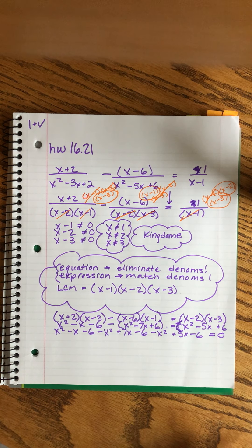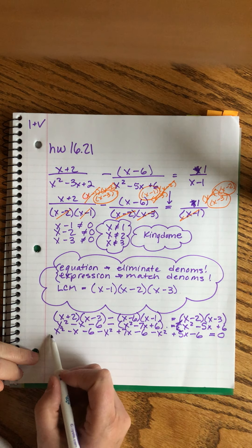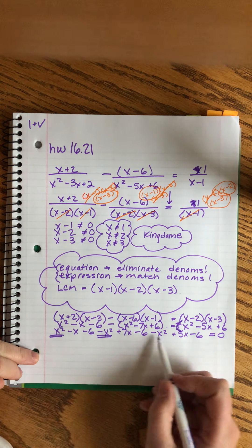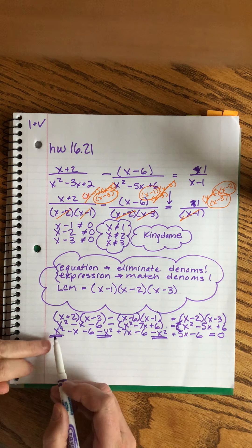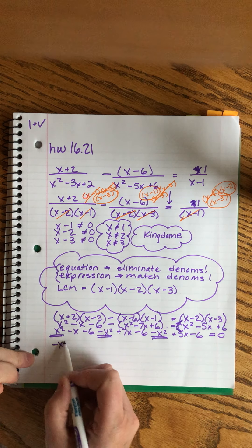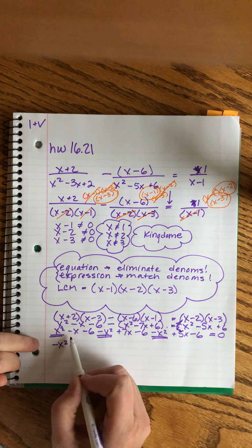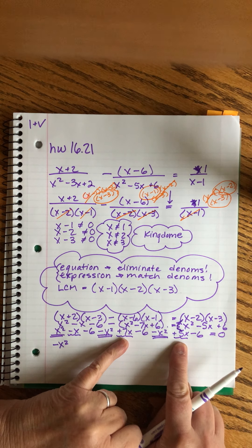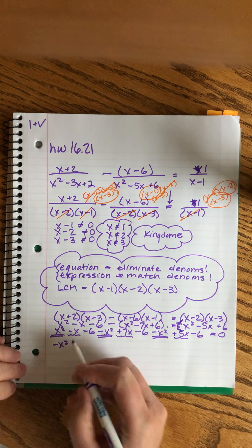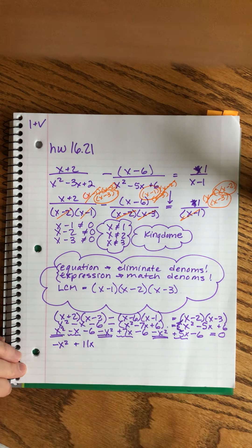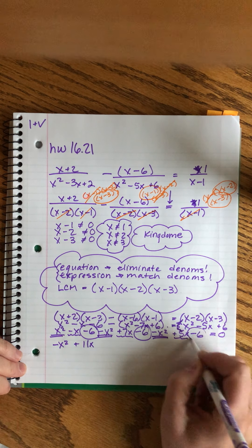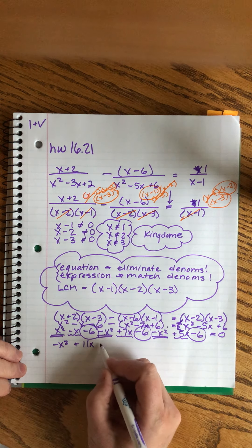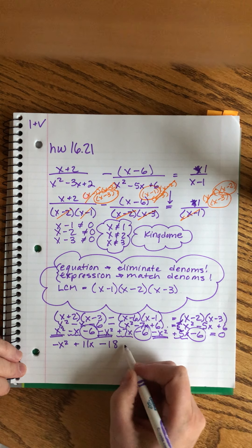Now I'm ready to combine like terms and there's a lot. Let's do the x² terms first — I see plus, minus, minus, so that's going to be minus x². Now the plain x terms: I have 7 + 5 = 12, minus 1, that's 11x. And the plain numbers: I have three minus sixes, so that is minus 18, equals zero. That calmed things down nicely.